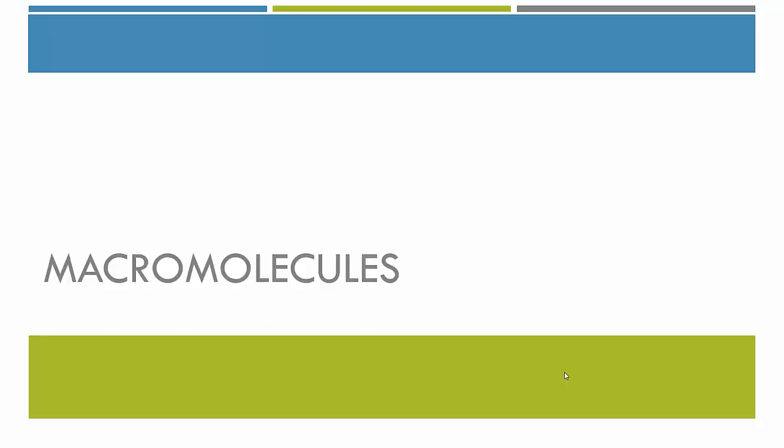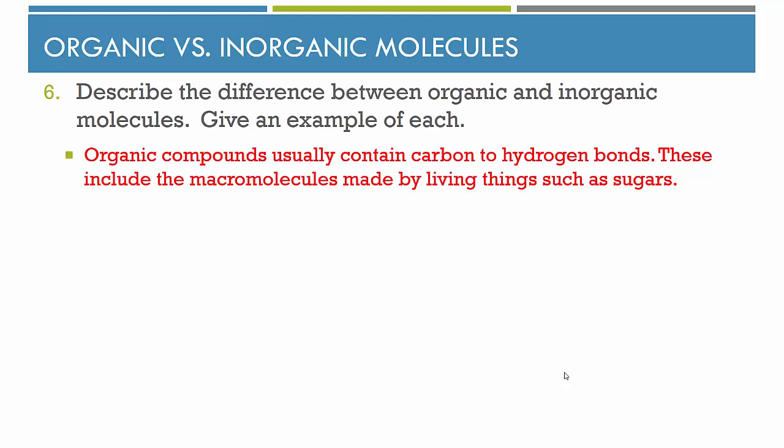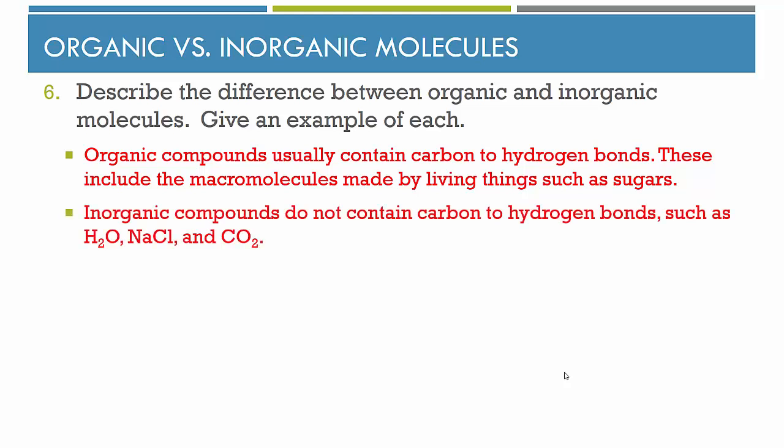The next set of questions are about macromolecules. Describe the difference between organic and inorganic molecules and give an example of each. Organic compounds usually contain carbon-to-hydrogen bonds and include the macromolecules made by living things, such as sugars and proteins. Inorganic compounds do not contain carbon-to-hydrogen bonds. For example, water has hydrogen but no hydrogen-to-carbon bonds. Sodium chloride is table salt. Carbon dioxide does have carbon but no carbon-to-hydrogen bonds, so we consider it an inorganic compound.